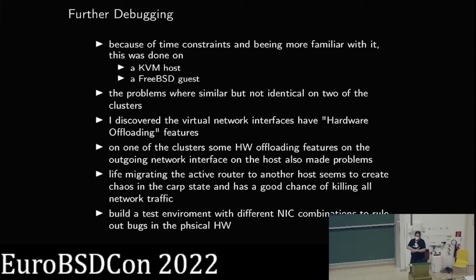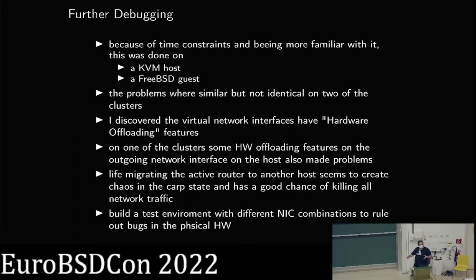I started to think about what I can do to further debug it. I'm currently testing with different hardware to differentiate what's a problem of the hardware, what's a problem of the virtualization, and what might be a bug in the guest driver — because all of them can be involved. Another thing I still need to debug is that if I do live migration of the routing VM, CARP gets kind of confused and kills all network, and then I have to access the remote console of the physical host to fix it.